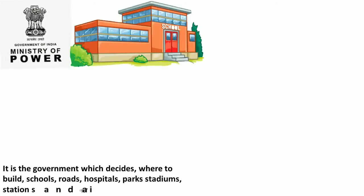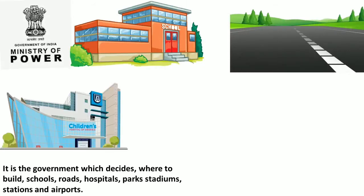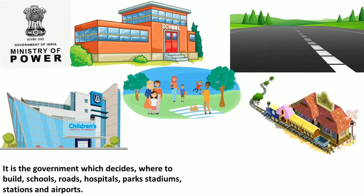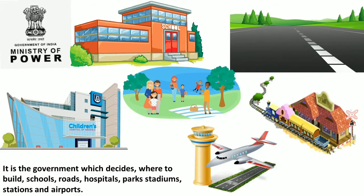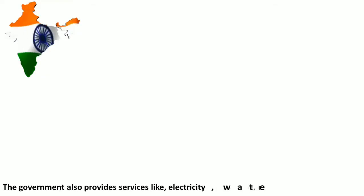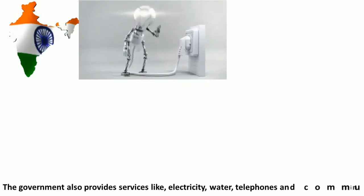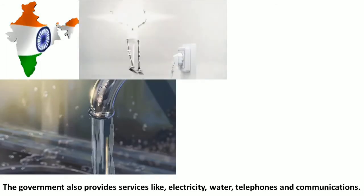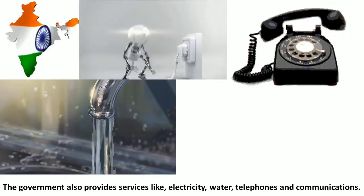It is the government which decides where to build schools, roads, hospitals, parks, stadiums and airports. The government also provides services like electricity, water, telephones and communications.